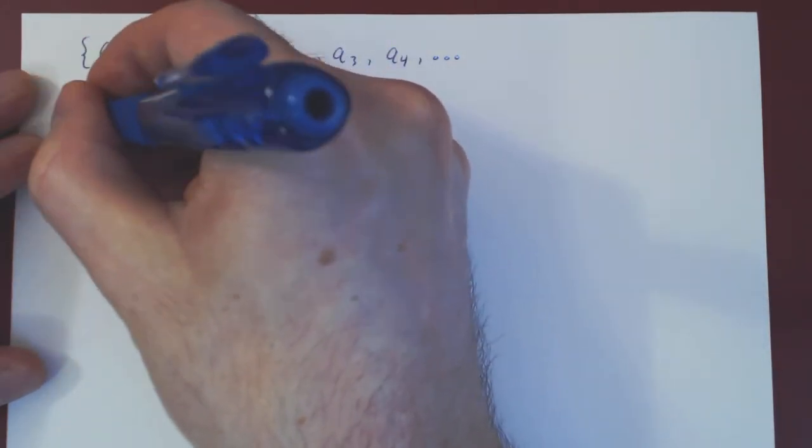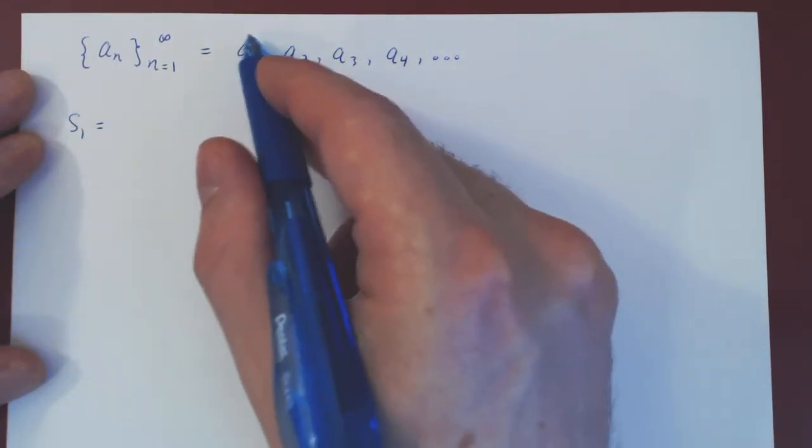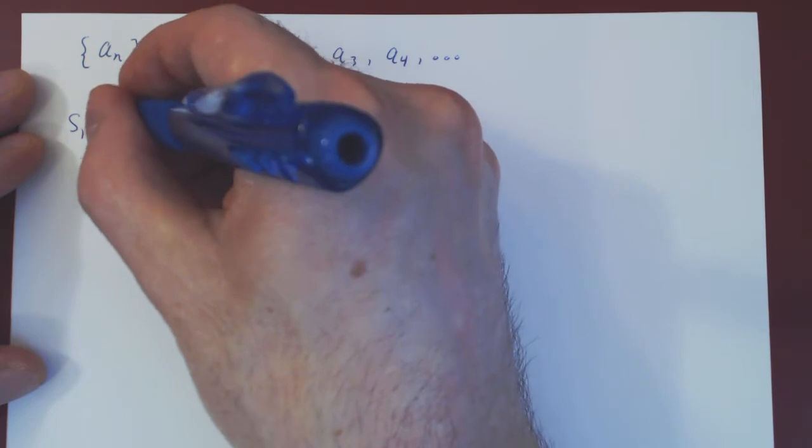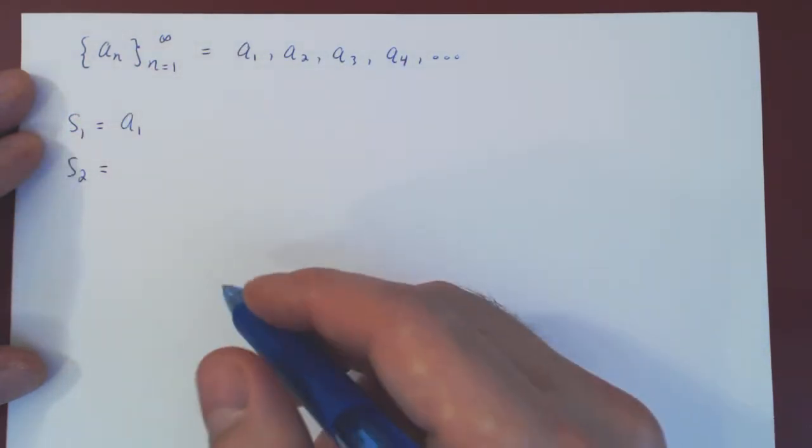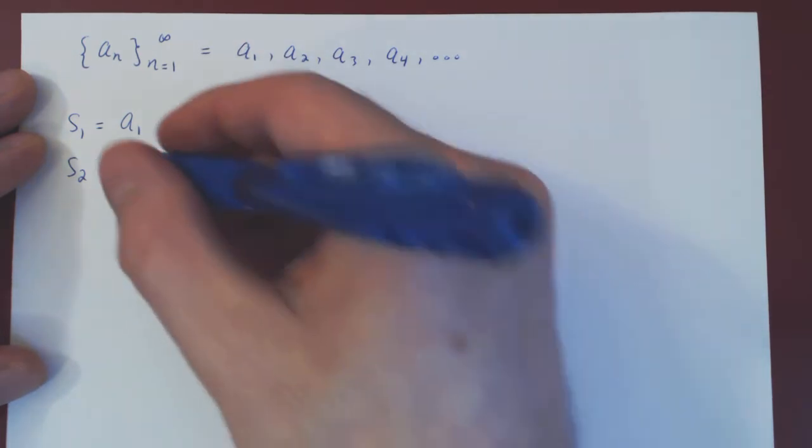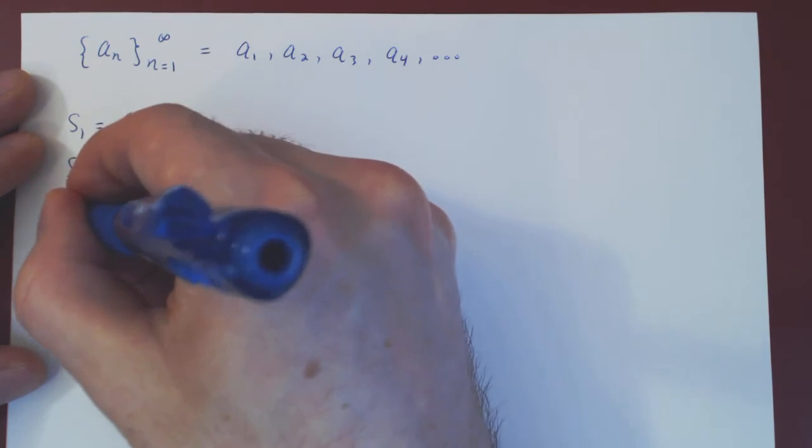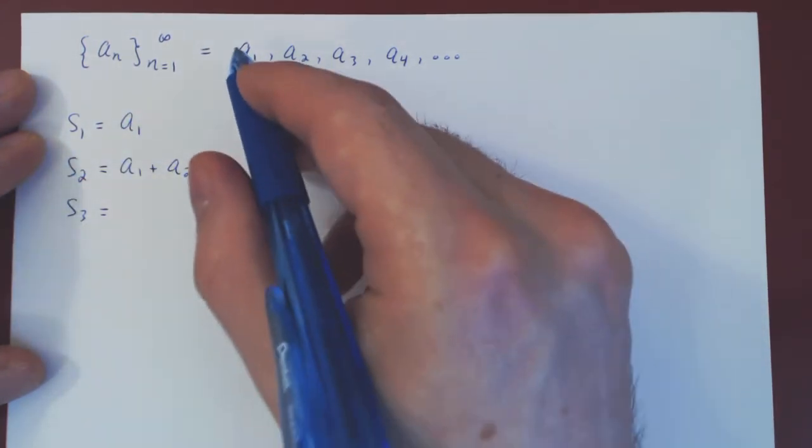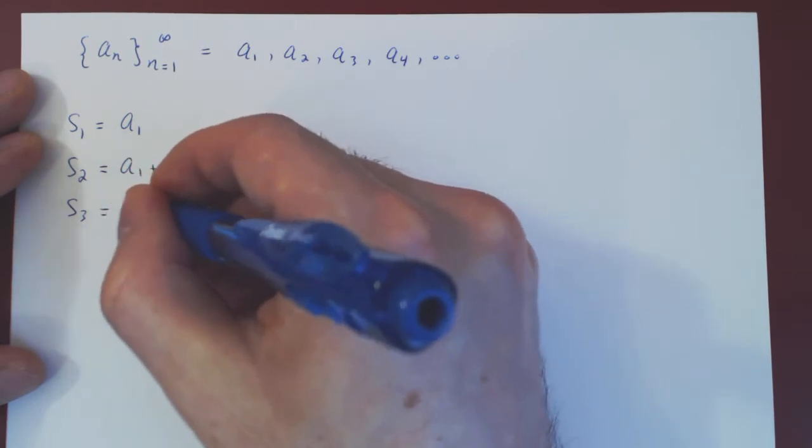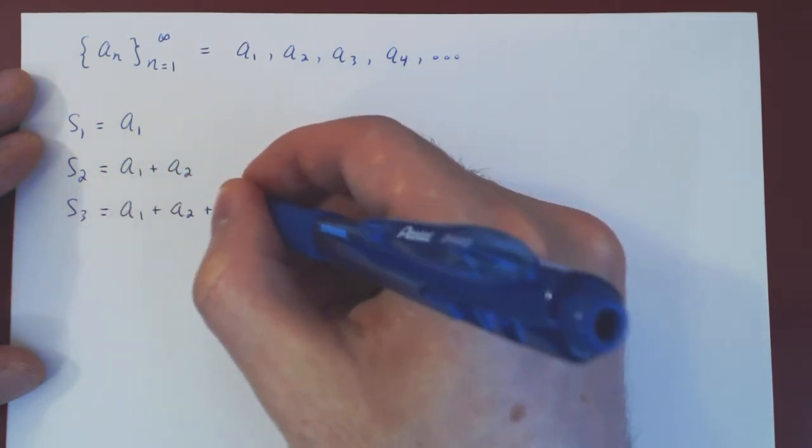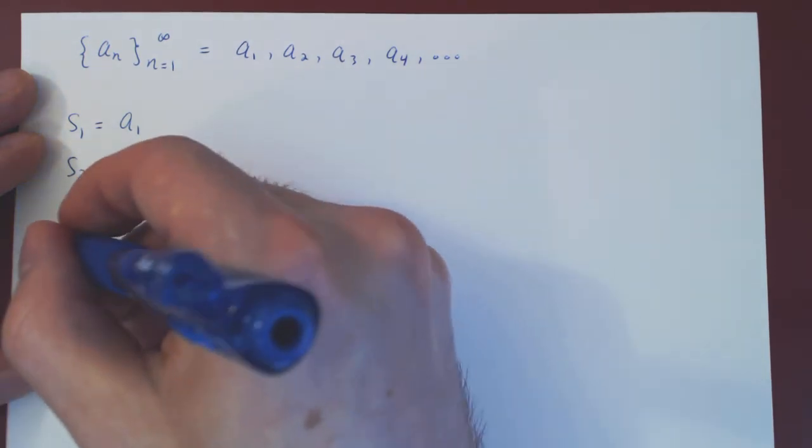So we can do s1, which is summing the first term of the sequence, so a1. s2 will be summing the first two terms of the sequence, so a1 plus a2. s3 is summing the first three terms of the sequence, a1 plus a2 plus a3. s4 is summing the first four terms of the sequence.